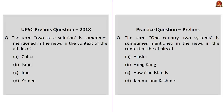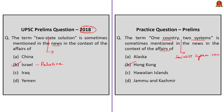A question asked in the 2018 prelims: 'The term two-state solution is sometimes mentioned in the news in the context of the affairs of...' — the correct answer is Israel. The term two-state solution is related to the Israel-Palestine conflict. On similar lines, a practice question asks: 'The term one country, two systems is sometimes mentioned in the news in the context of the affairs of...' — the correct answer is Hong Kong. The two systems refer to the socialist system and policies in the Chinese mainland, and the capitalist system and way of life in the Hong Kong SAR. This arrangement started from 1st July 1997 and remains unchanged for 50 years, with the policy remaining in force in Hong Kong until the last date of June 2047.